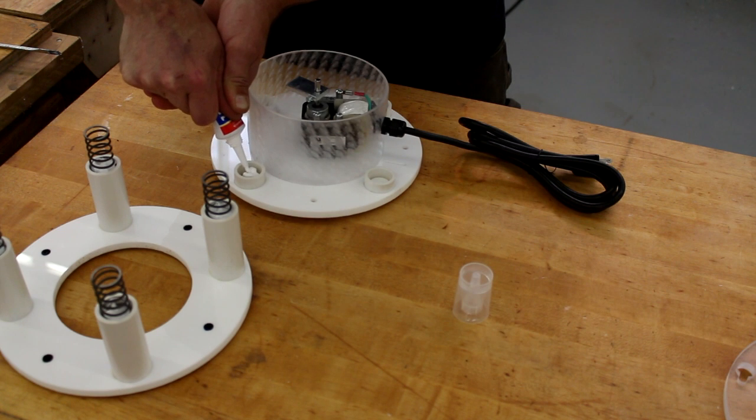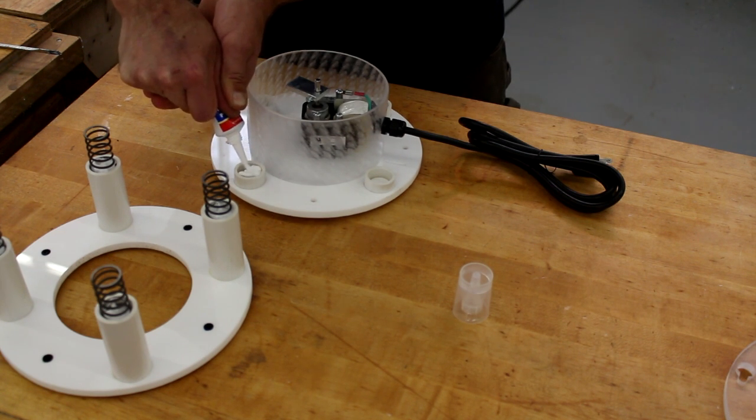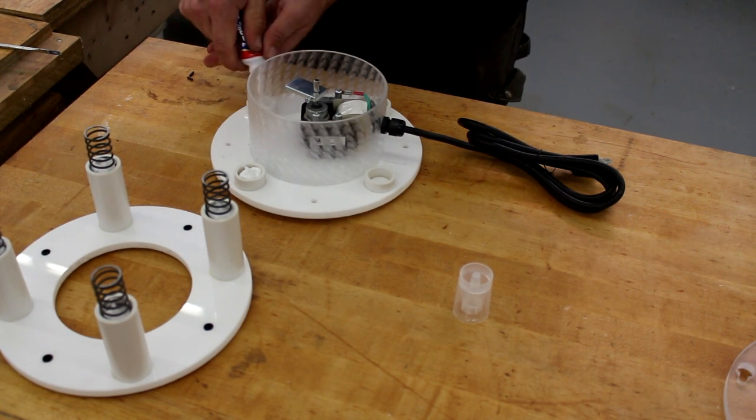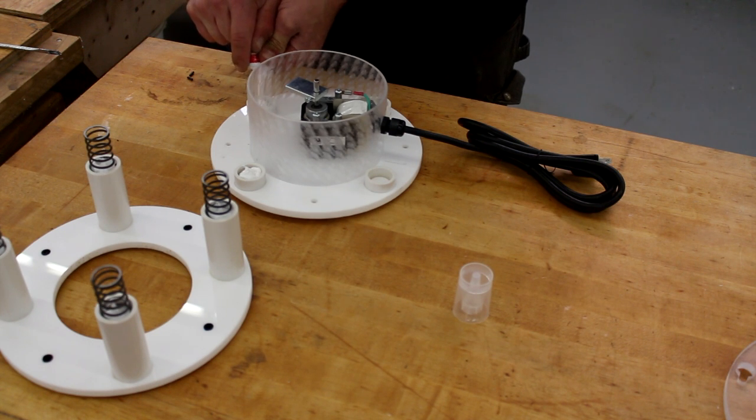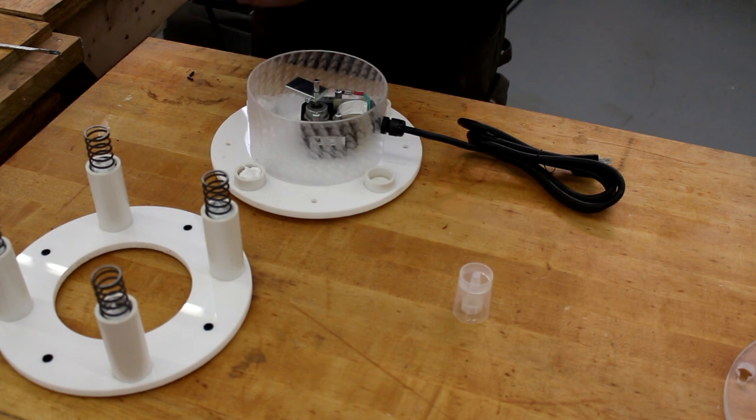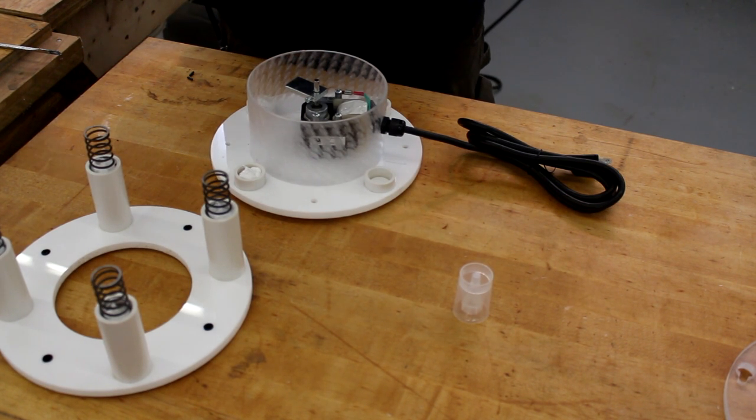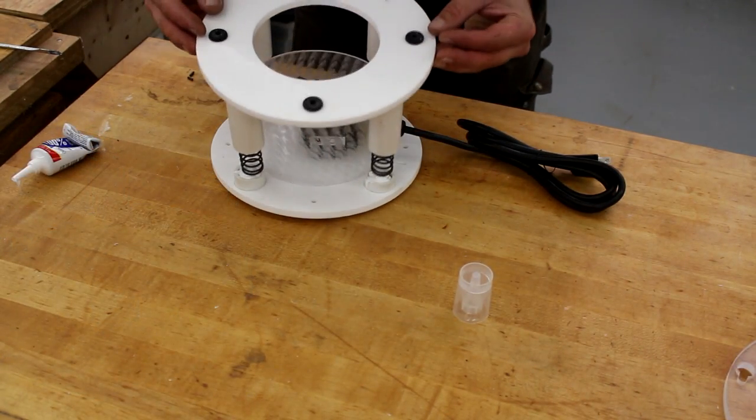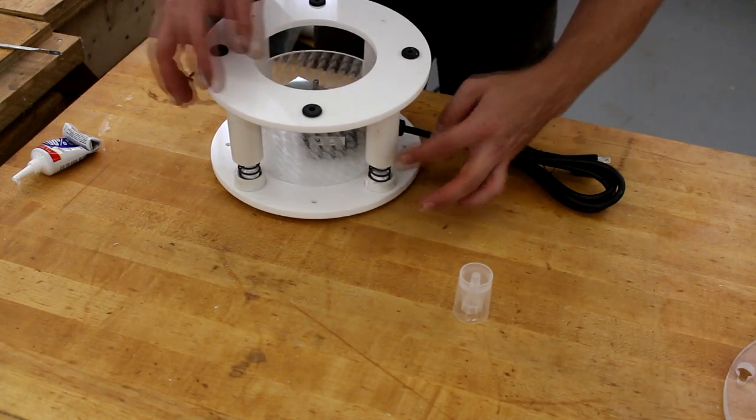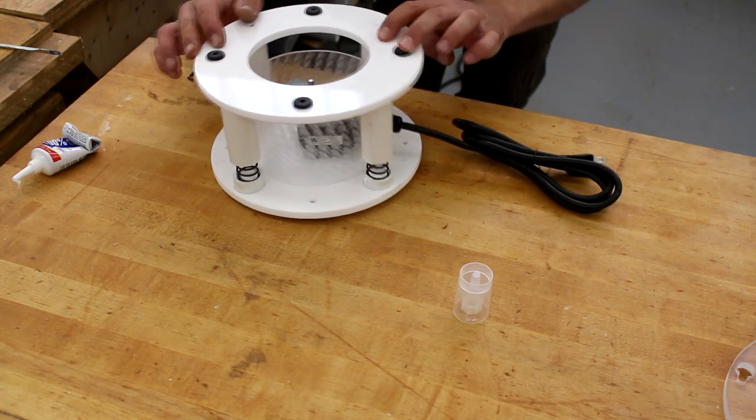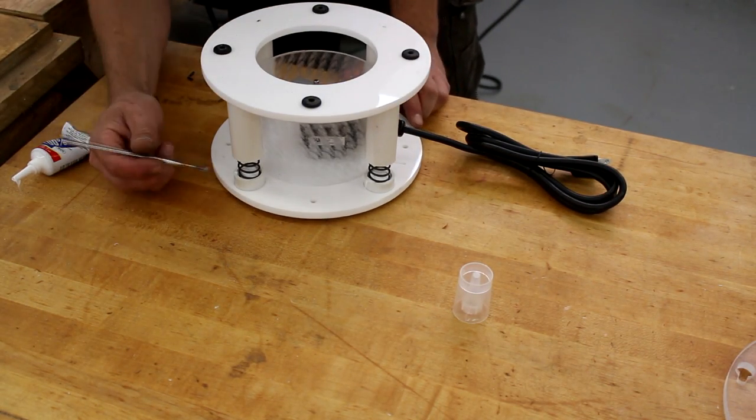Now we are going to add silicone to the motor side of the base. Place the partially assembled half into the spring retainers and then using the brush spread it out to the edges. Let this assembly fully dry overnight.